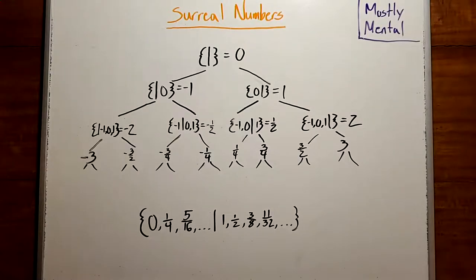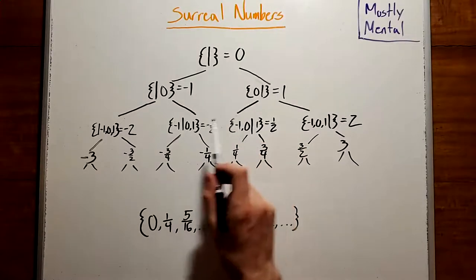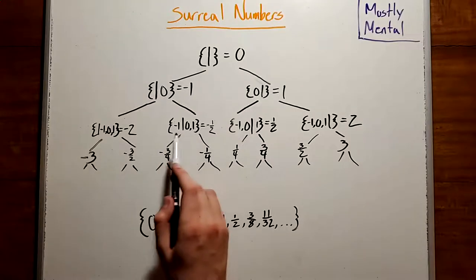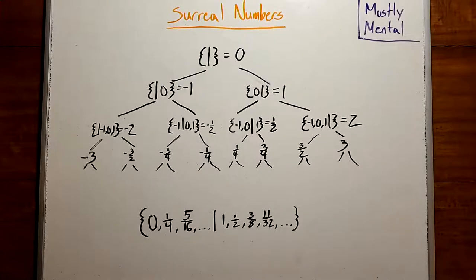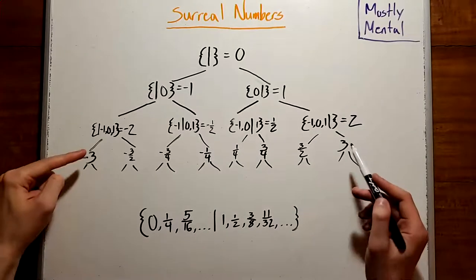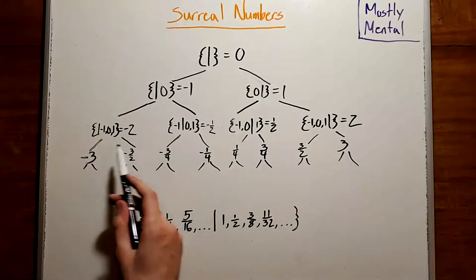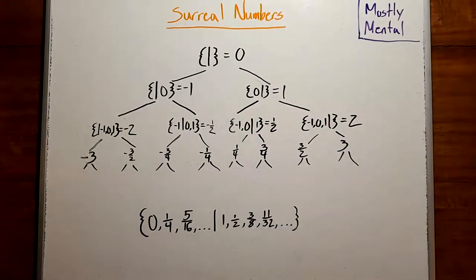This new notation actually gives us a way to define numbers from the ground up. We'll start with two empty sets, which we'll call 0. That's the simplest number. And then we define 1 to have 0 on the left and negative 1 to have 0 on the right. Those are the next simplest numbers. And from there, we take all partitions of negative 1, 0, and 1, where everything on the left is less than everything on the right. And the ones on the ends are just counting down and up, respectively, and the ones in the middle are going to be halfway between their two neighbors. And then we repeat this process. We take all of the numbers from these first three rows and partition them in every possible way, where the left set is less than the right, and that'll give us the numbers in this fourth row. And if we repeat this for long enough, we'll end up with every possible binary fraction.